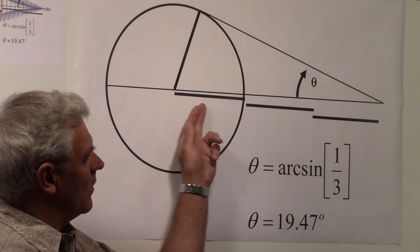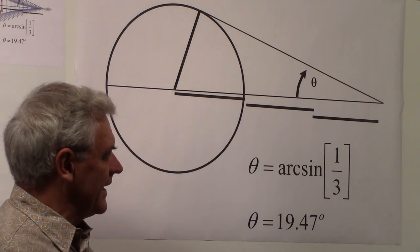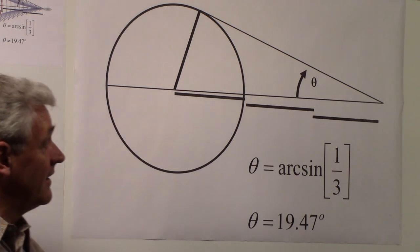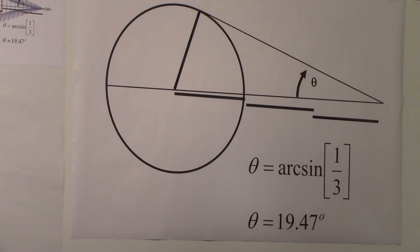Again, here's one unit here, 1, 2, 3 units here. One over three. And that angle is 19.47 degrees. And so that is a simple way to look at how to get the Kelvin wake angle.